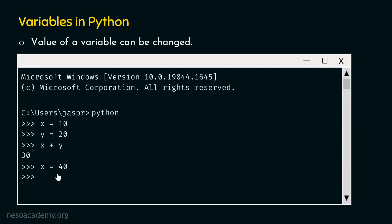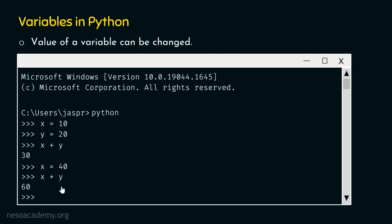If we hit enter, we will again get the Python interactive shell, meaning we are ready to type the next command. Let's type x plus y now. We know that x is now the name attached to value 40, so x is no longer pointing to value 10 but to value 40. Eventually this will get replaced by 40, and y will get replaced by 20 because y is still pointing to value 20. If we hit enter, we will get value 60 as a result, because 40 plus 20 is 60.